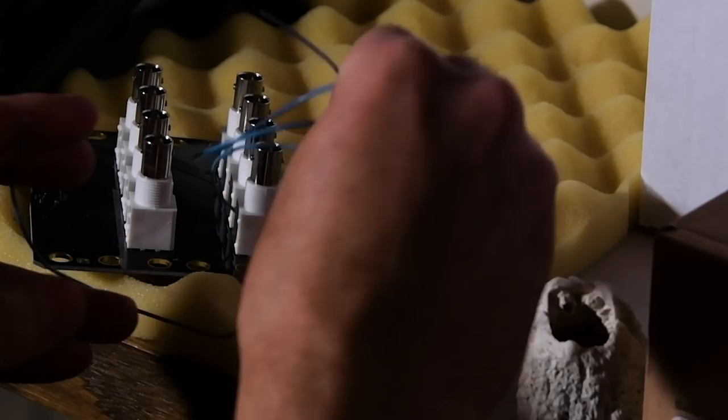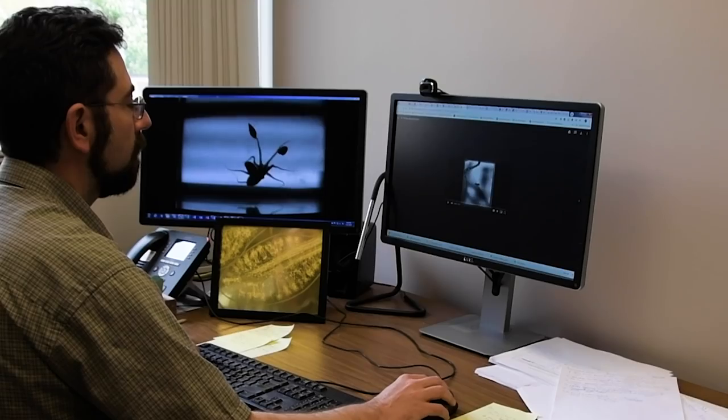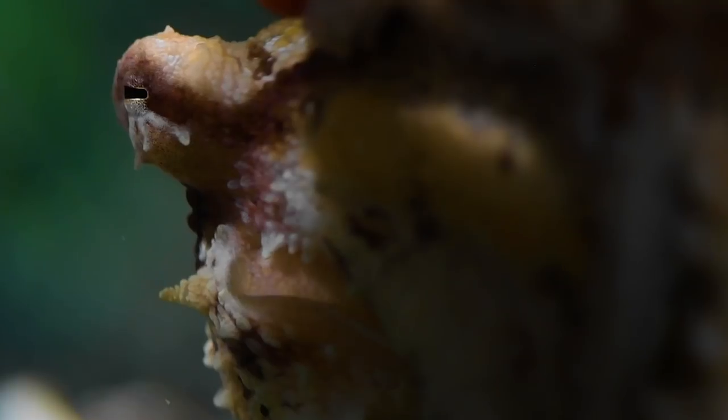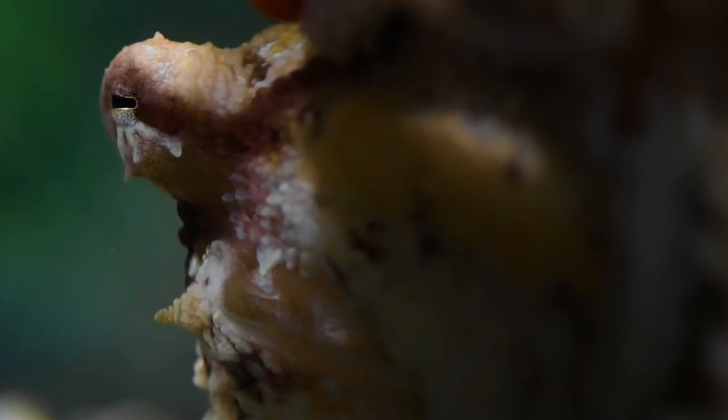In some ways, this is a watershed moment in general for science. If we understand how a neural structure like the octopus nervous system can solve difficult problems, we might be able to design better ways to solve similar problems artificially.